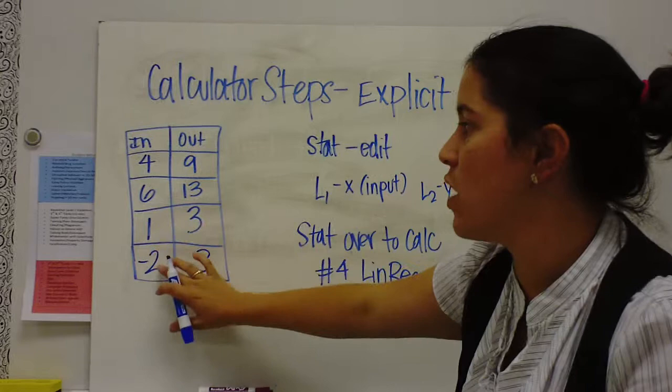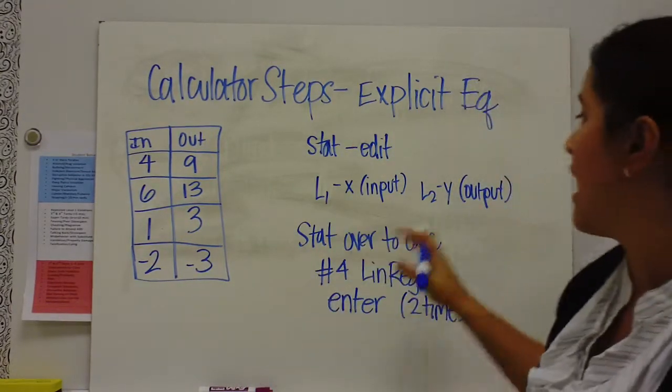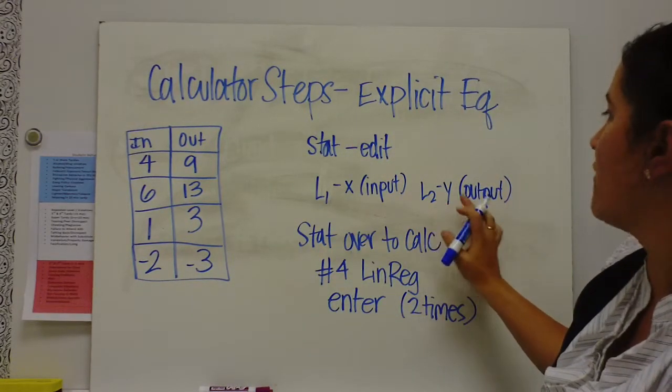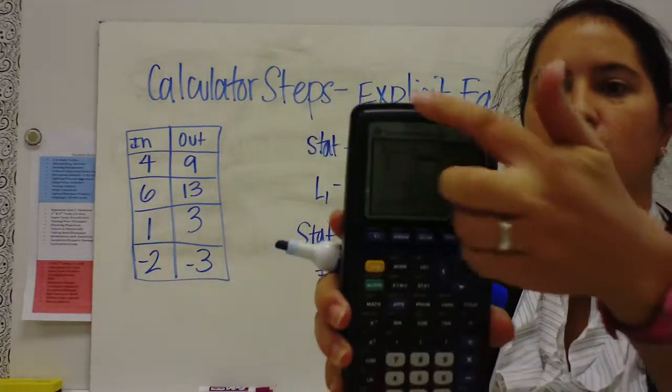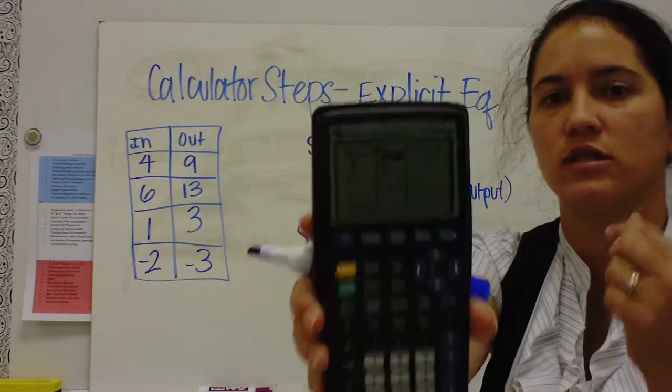So 4, 6, 1, negative 2. That's going to go in your list 1. In list 2, you're going to put your y values, which are your output. So you're going to put your values into list 1 and list 2.